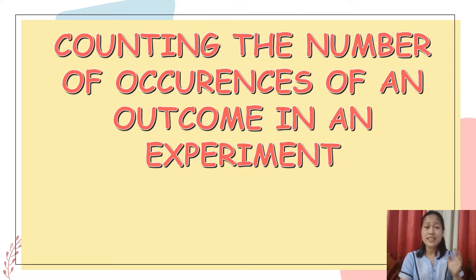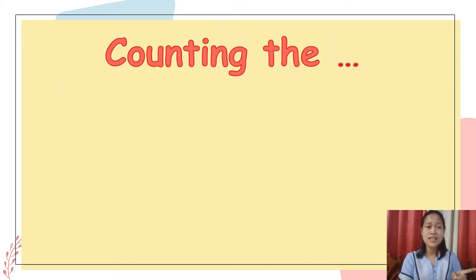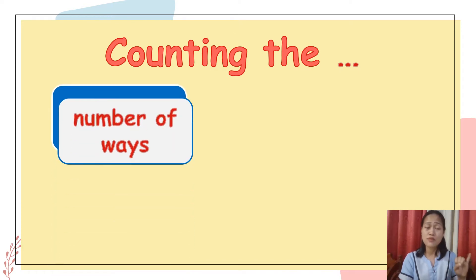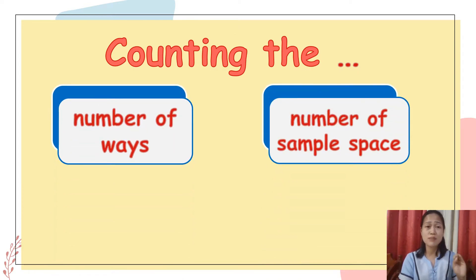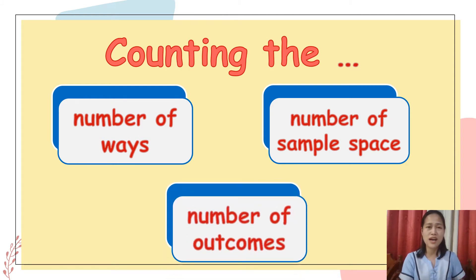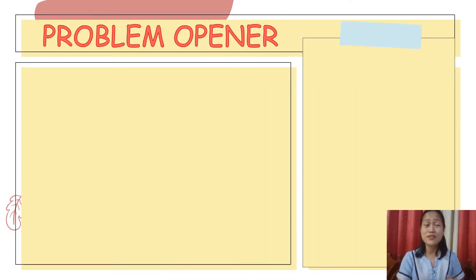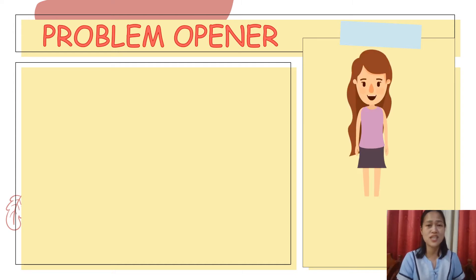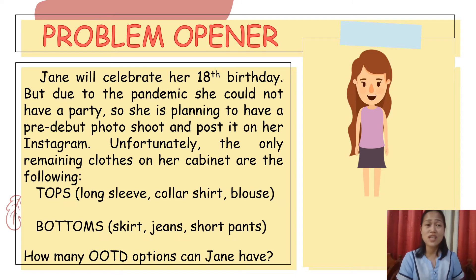Remember, class, that counting the number of occurrences of an outcome in an experiment is simply counting the number of ways, the number of sample space, and the number of outcomes. In order for you to understand better, let's have this problem opener. I want you to meet my friend Jane. Jane will celebrate her 18th birthday, but due to the pandemic, she could not have a party.